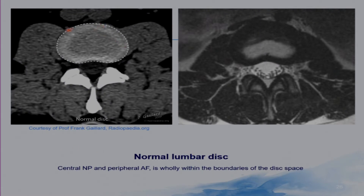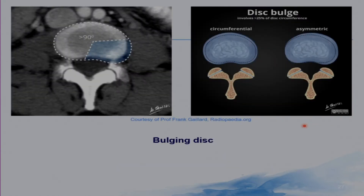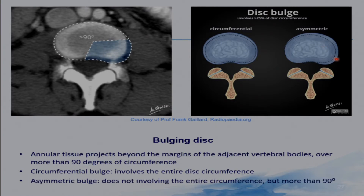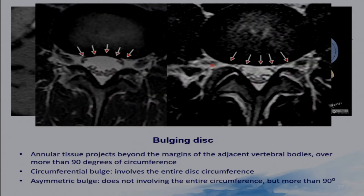This is a normal disc in a CT study and in an MRI study. A disc bulge is annular tissue projecting beyond the margins of the adjacent vertebral bodies over more than 90 degrees — that is, more than 25% of the disc circumference. A circumferential disc bulge involves the entire disc circumference, and an asymmetric disc bulge does not involve the entire circumference but more than 90 degrees. This MRI study shows a disc bulge on the right side and a normal disc on the left side for comparison.